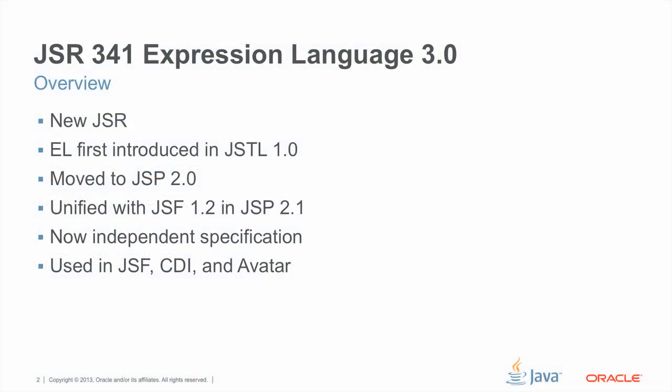Although JSR 341 is a completely new JSR, the technology was not new. It was first introduced in JSTL 1.0 and later adopted for JSP 2.0. In JSP 2.1, the expression language unified with the expression language in JSF 1.1 so that they have one unified expression language in JSP. JSR 341 is now a completely independent specification, and the technology is also used in other Java EE technologies such as JSF and CDI.